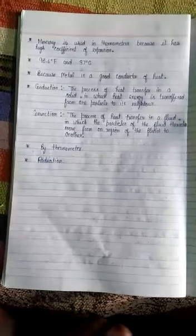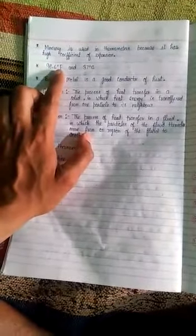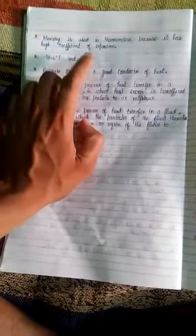Mercury is used in thermometer because it has high coefficient of expansion. After this, next question is what is our normal body temperature in Fahrenheit scale? It is 98.6 degrees Fahrenheit and 37 degrees Celsius.